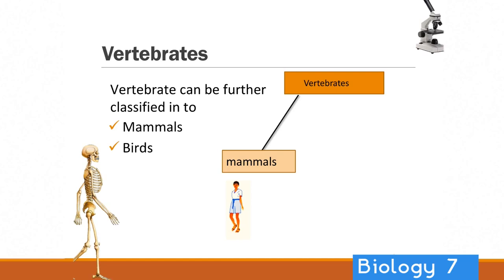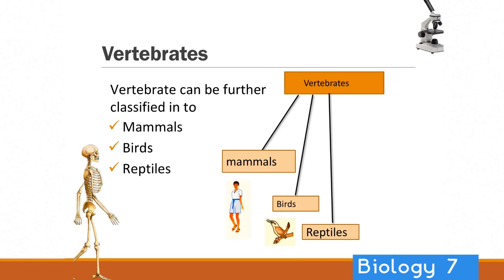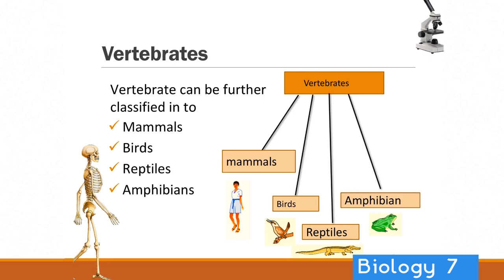Birds are also vertebrates but different in a few ways — birds lay eggs. Reptiles generally will lay eggs too, and they are different in a few other ways. Amphibians include your frogs and also tadpoles in their life cycle. Fish are a separate group of vertebrates too. All of these groups have a backbone — they're all vertebrates — but they share different characteristics within those groups.